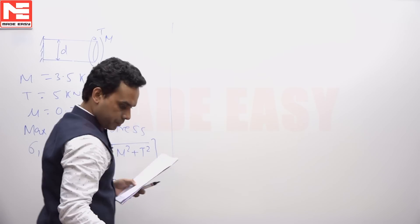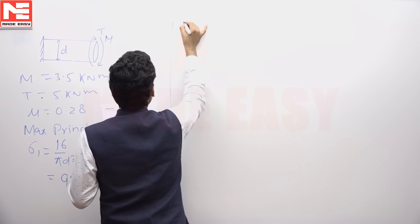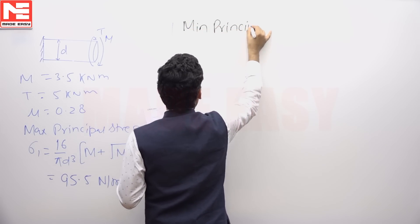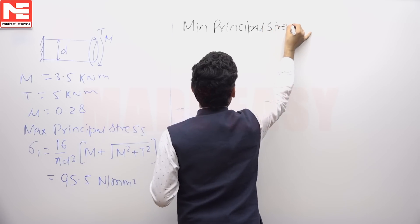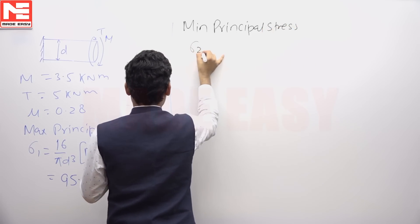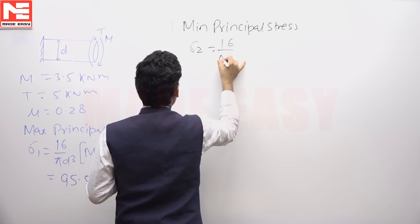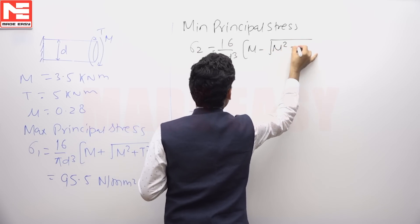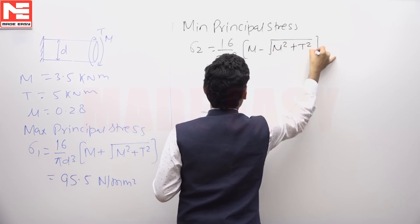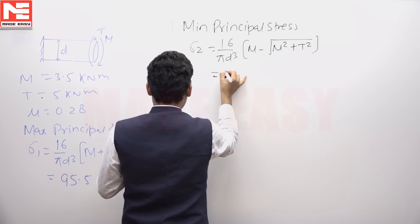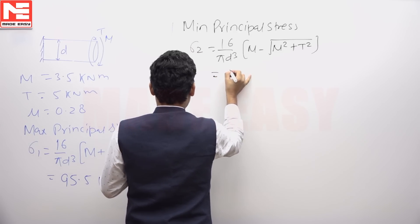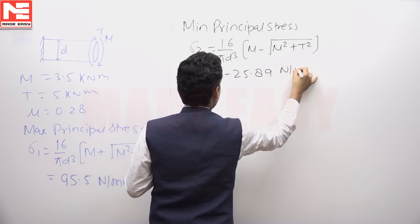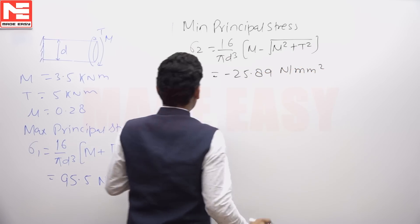For the minimum principal stress sigma 2, the formula is: σ₂ = (16/πd³)(M - √(M² + T²)). This equals −25.89 N/mm².